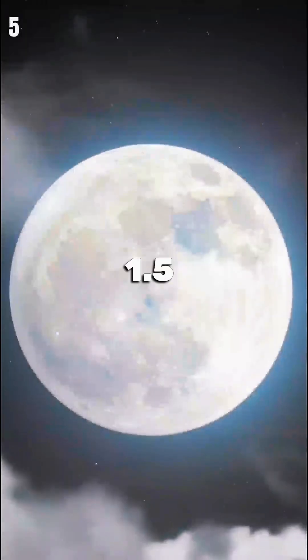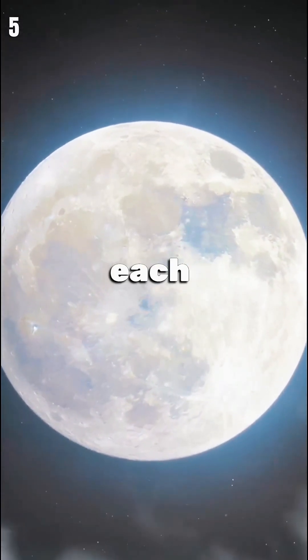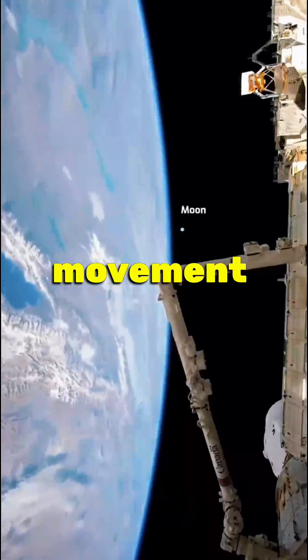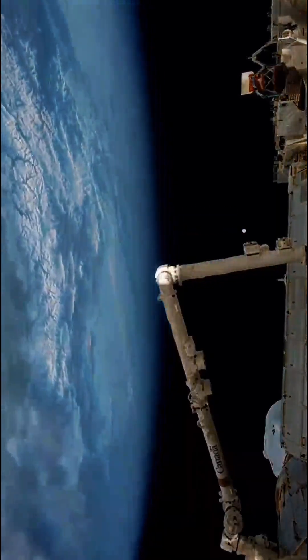The Moon moves about 1.5 inches farther from Earth each year. This gradual movement also makes Earth's days longer over millions of years.